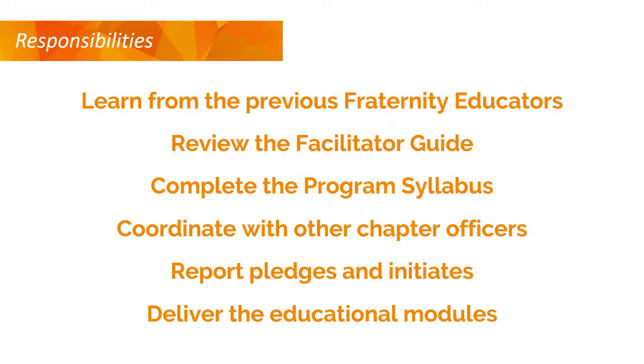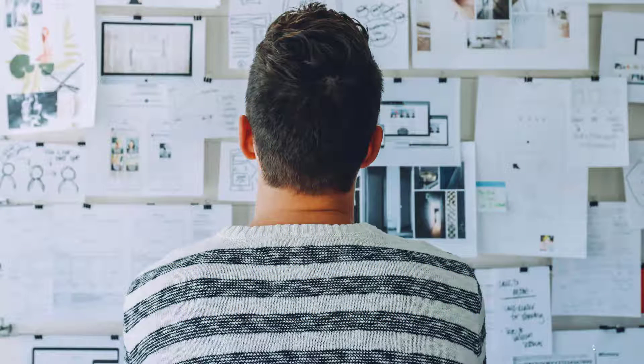Serving as a fraternity educator and adhering to the numerous responsibilities requires experience and competence with several different skills to be an impactful leader. While fraternity educators should seek the chapter's opinion, as the officer in charge of pledge education, they are ultimately responsible for choosing electives and structuring the program. As the liaison between the pledge class and the chapter, fraternity educators must listen to the needs of both groups to effectively communicate on behalf of both.